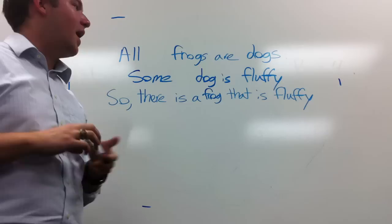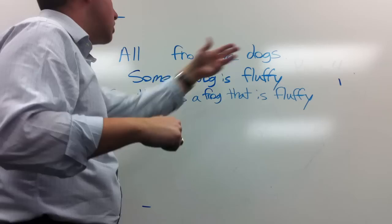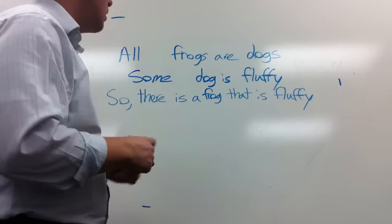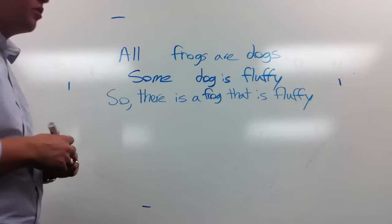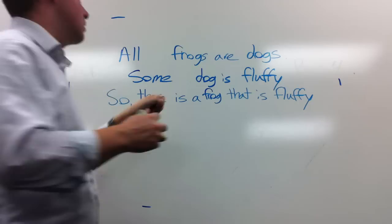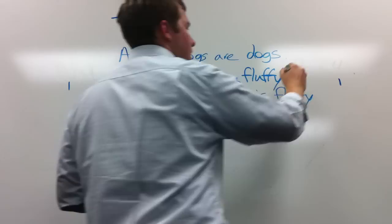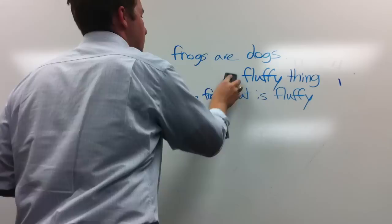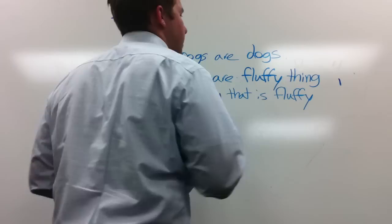Hopefully most of you caught the trick here — 'fluffy.' Every one of our terms needs to be a plural noun phrase: dogs, frogs — those are plural noun phrases. It can even be a phrase like 'people that ride bicycles.' But 'fluffy' is an adjective, not a plural noun phrase. To fix it, just make it a noun phrase. So we write: 'Some dogs are fluffy things.' Now that's in standard I form.